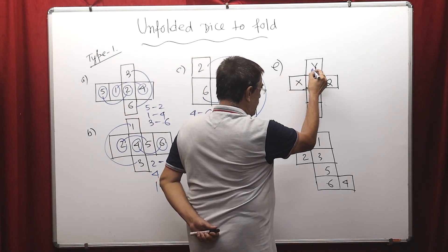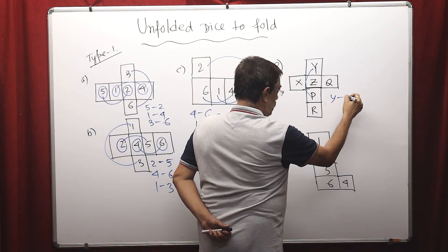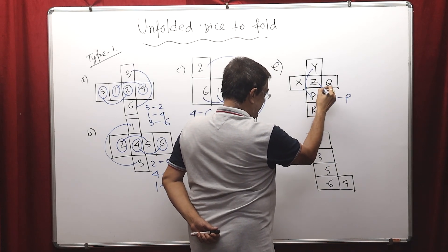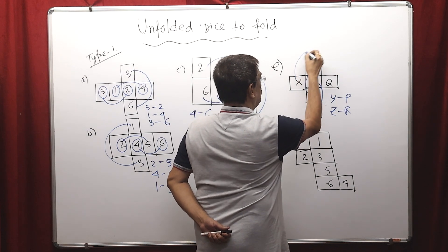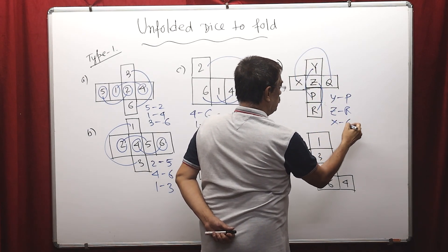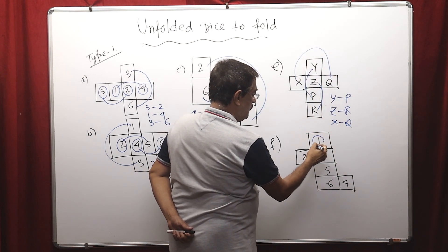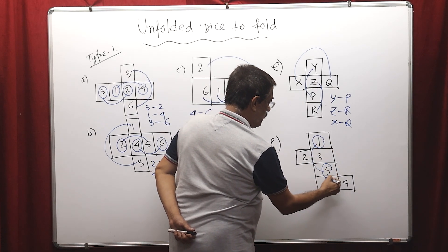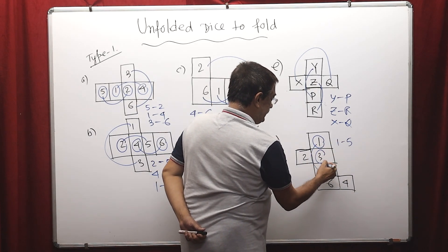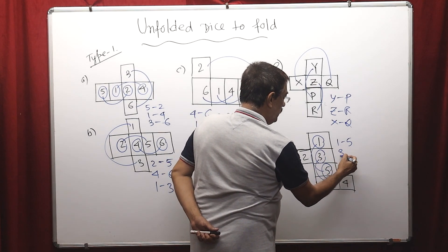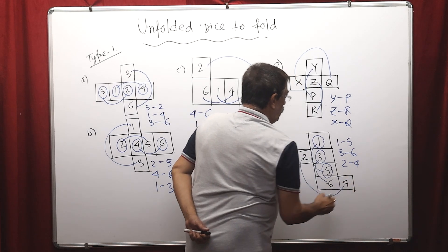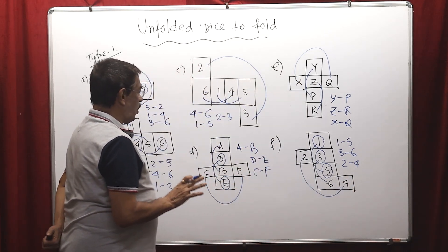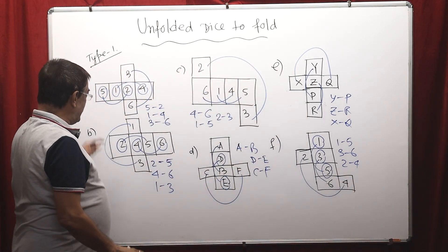Similarly, Y opposite P, P opposite Y, Z opposite R, Z opposite R, and X opposite U, X opposite U. Similarly here: 1 opposite 5, 1 opposite 5, then 3 opposite 6, then 2 opposite 4. So always start from the horizontal vertical line where we can get the maximum box.